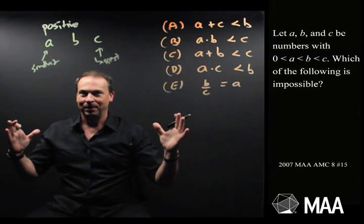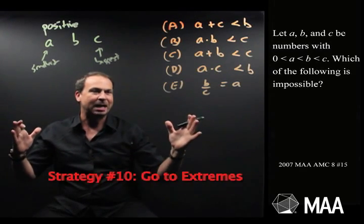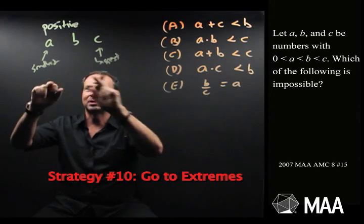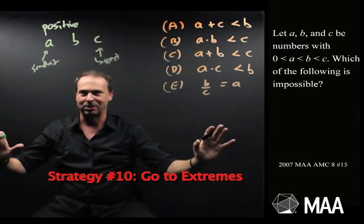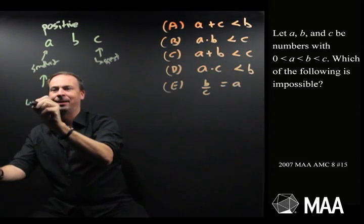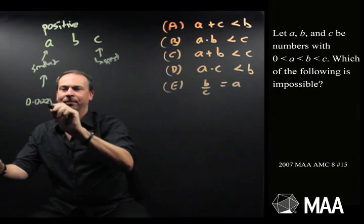But what I'm going to do, I feel like doing strategy number 10, which is like go to extremes. I'm going to choose some really small numbers, some really big numbers. Let's see. So maybe A can be something like 0.001.